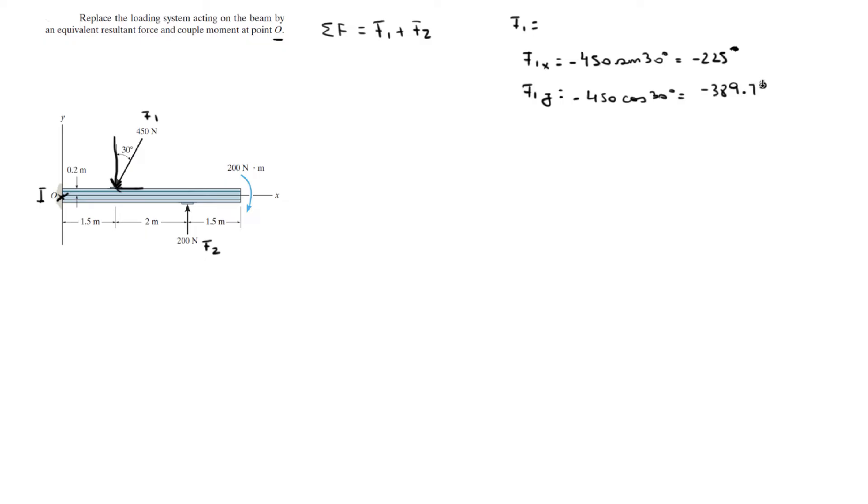Not degrees, sorry. And that means that F1 is equal to negative 225I minus 389.7J. And the magnitude is in Newtons. Right there.